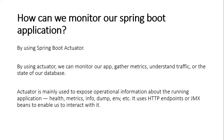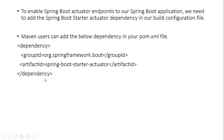So the first question is: how can we monitor our Spring Boot application? To monitor our Spring Boot application, we can use Spring Boot Actuator. By using this actuator, we can monitor our application, gather metrics, understand traffic, or the state of our database. To enable the Spring Boot Actuator endpoint in our application, we have to add this dependency.